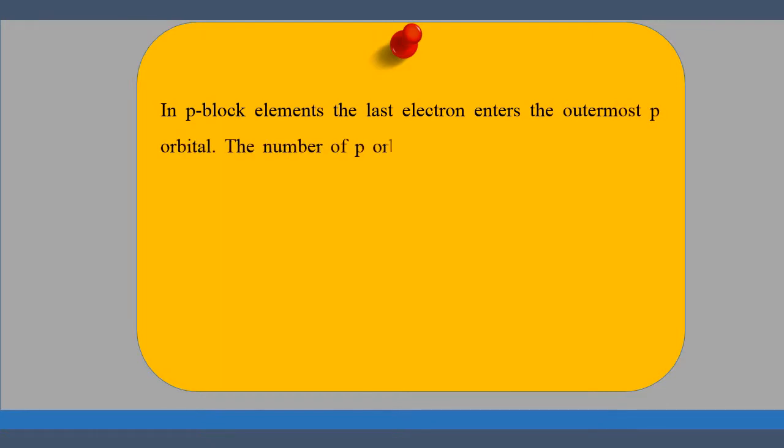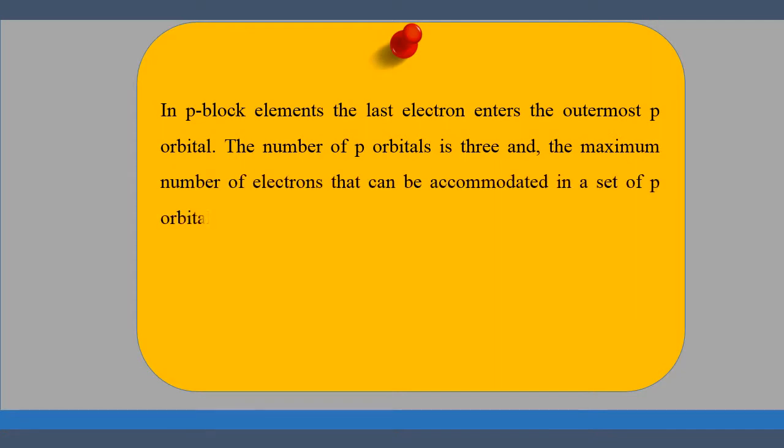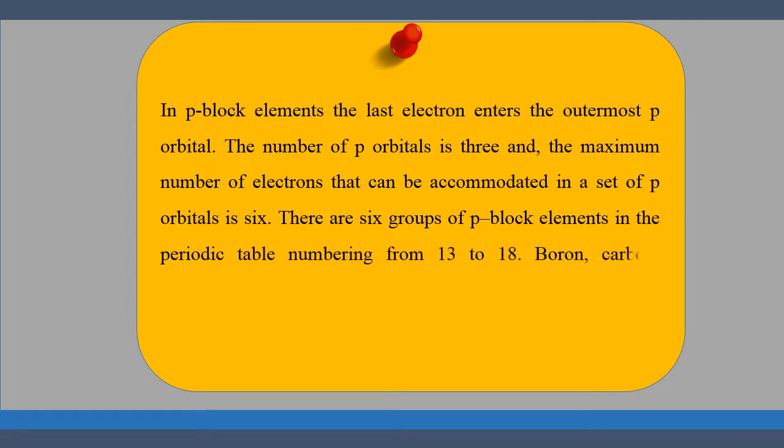As we know that the number of P-orbitals is 3 and therefore the maximum number of electrons that can be accommodated in a set of P-orbitals is 6. Consequently, there are 6 groups of P-Block Elements in the periodic table numbering from 13 to 18.